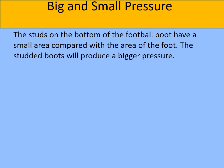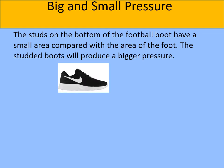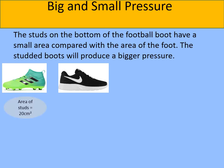Let's look at an example of the type of question you could be asked in an exam — we're going to compare the pressures of two different pieces of footwear: a pair of football boots and a pair of trainers. The area of the studs for the football boots — the total area of all the studs added together — is 20 centimetres squared. The area of a pair of trainers is 200 centimetres squared. So the trainer has a much greater surface area in contact with the ground compared to the football studs.